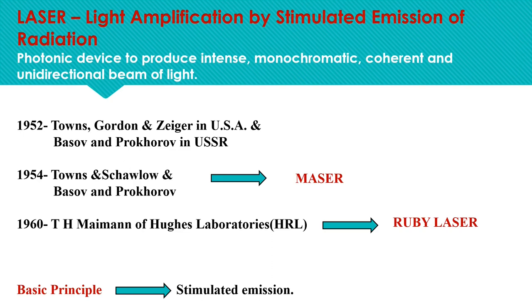In 1960, T.H. Maiman of Hughes Research Laboratory fabricated the first laser using a ruby crystal as the amplifier and a flash lamp as energy source, known as ruby laser. After this, a series of lasers were discovered.